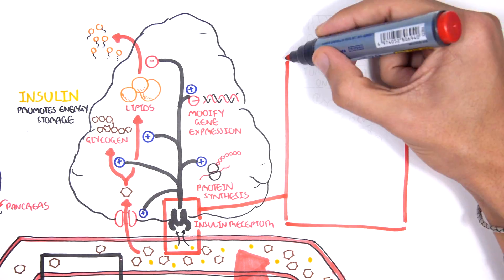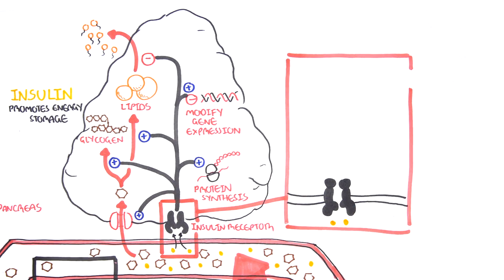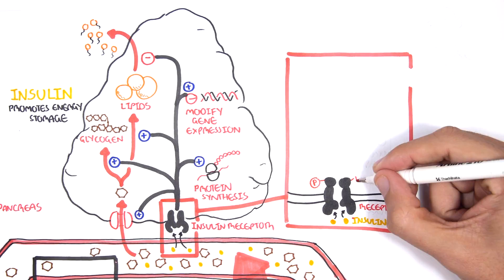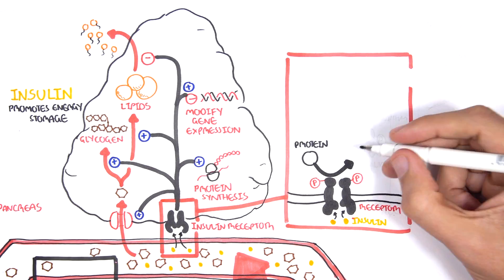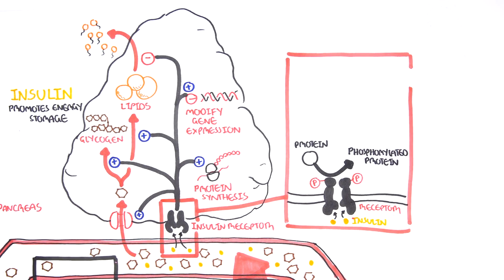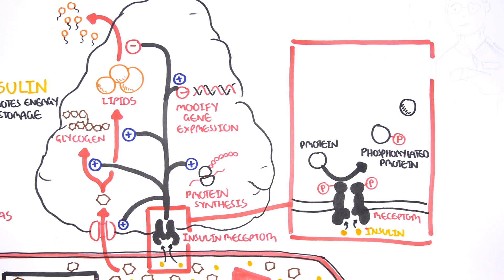Importantly, when insulin binds to the receptor, the multiple processes that occur within the fat cell are not all turned on at once. Insulin regulates the multiple processes using protein phosphorylation. Protein phosphorylation is a normal chemical reaction that changes the behavior of proteins inside the cell.